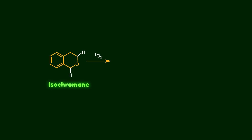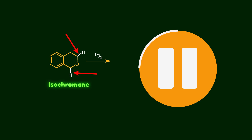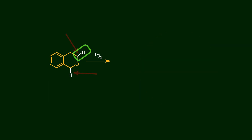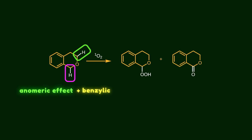This regioselectivity becomes even more interesting when we use isochromene in the reaction. Now there are two possible sites for oxidation, but only one of them is oxidized selectively. One C-H bond is activated by the anomeric effect; the other is also activated by the anomeric effect but is additionally at the benzylic position, so it is activated more and is oxidized selectively. The first product is a peroxide, but it's not stable and is converted into a thermodynamically more stable lactone.